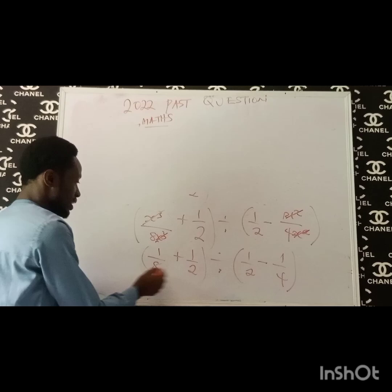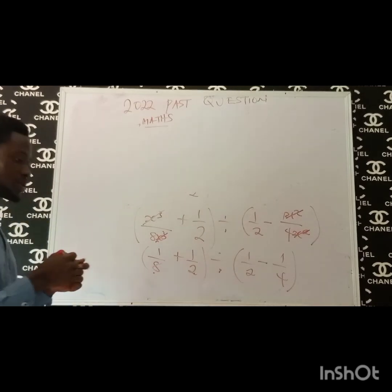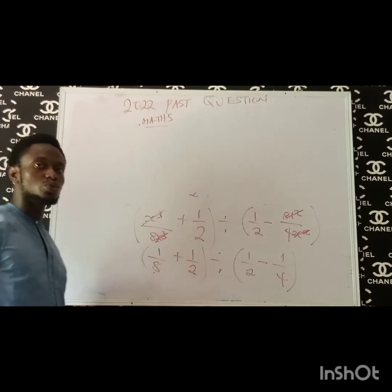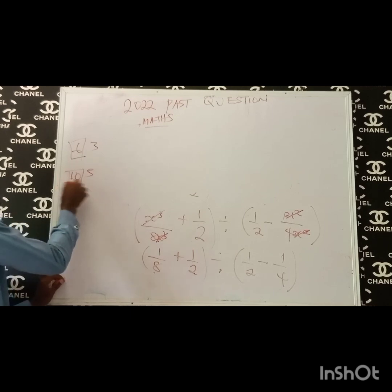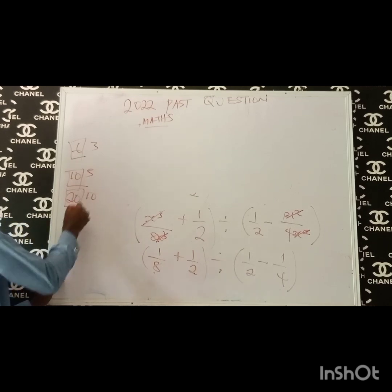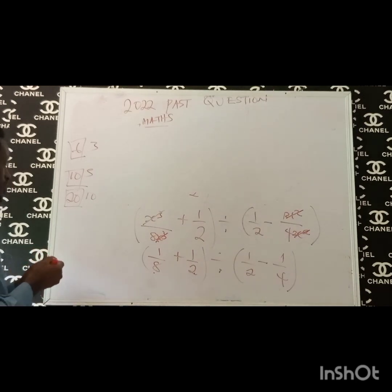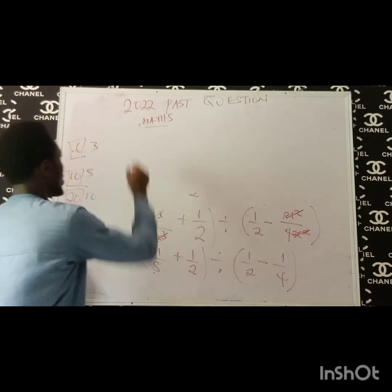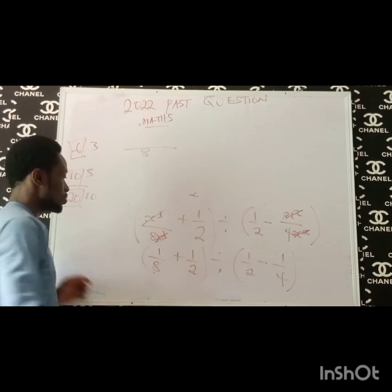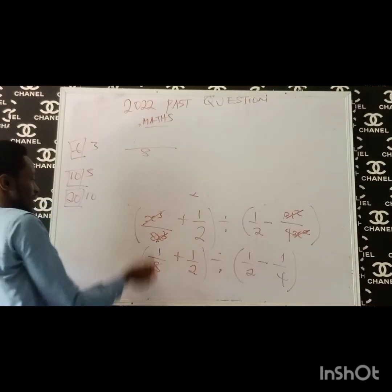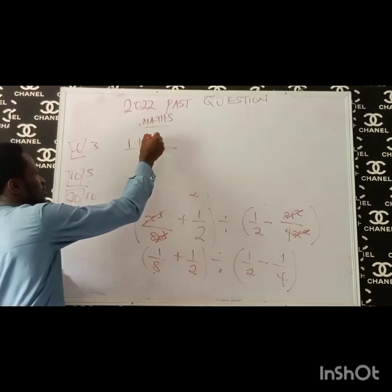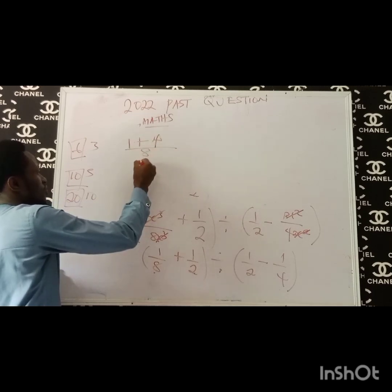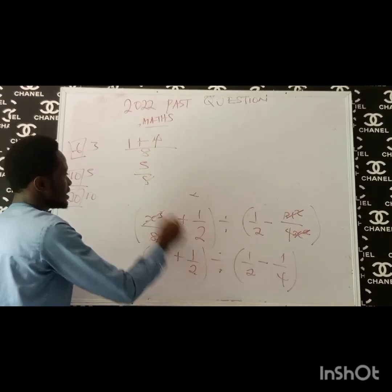For simplification: the LCM of 8 and 2 is 8 — because 8 can be divided by 2. Similarly, LCM of 4 and 2 is 4. So 8 divided by 8 is 1, times 1 is 1. Plus 8 divided by 2 is 4, times 1 is 4. So the numerator gives us 5 over 8. Remember it is all these that give us this result.